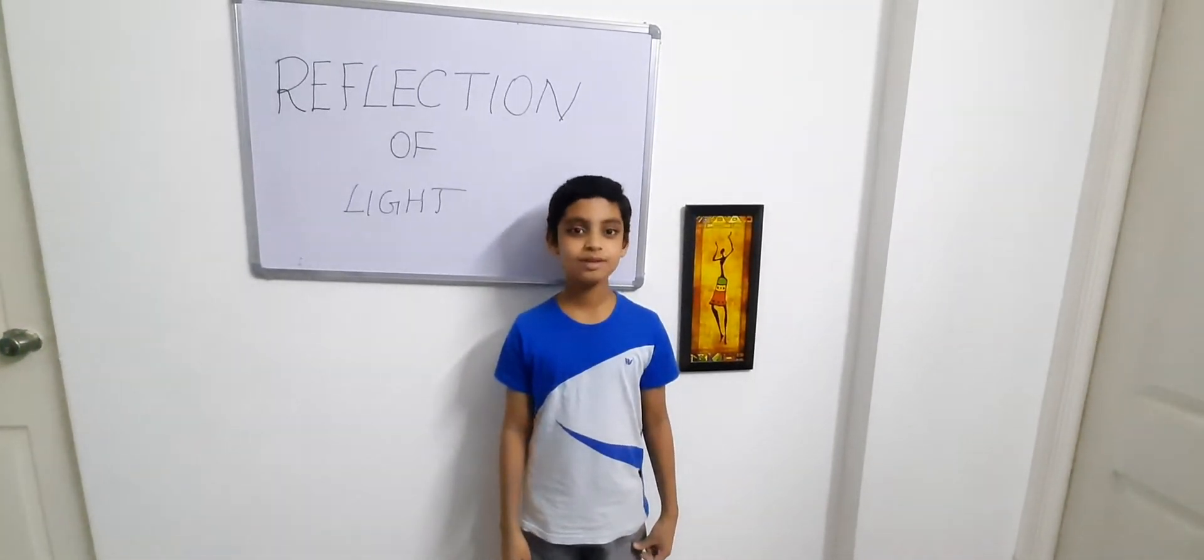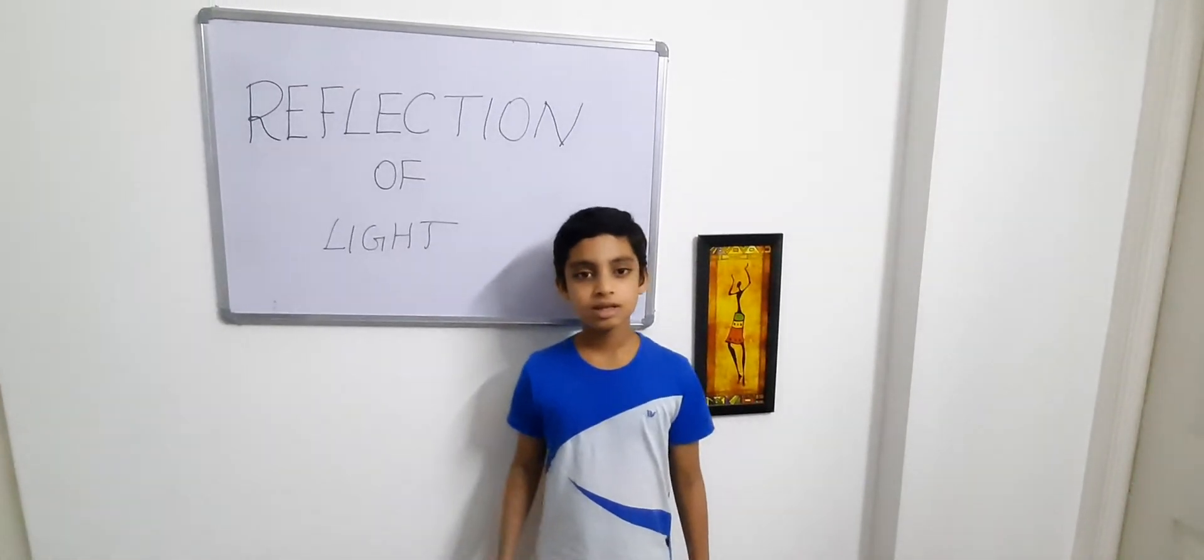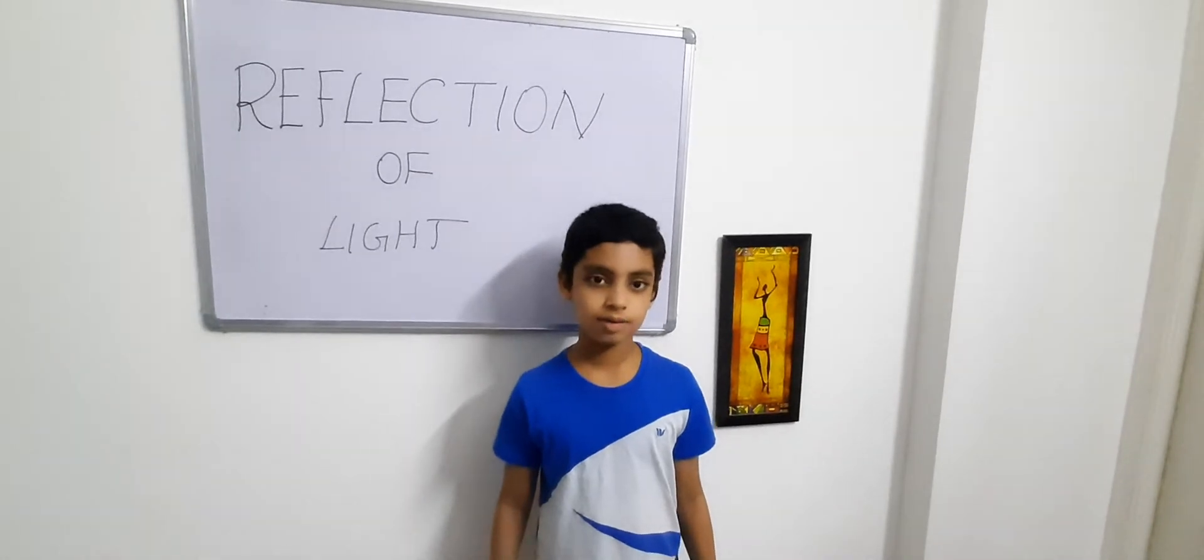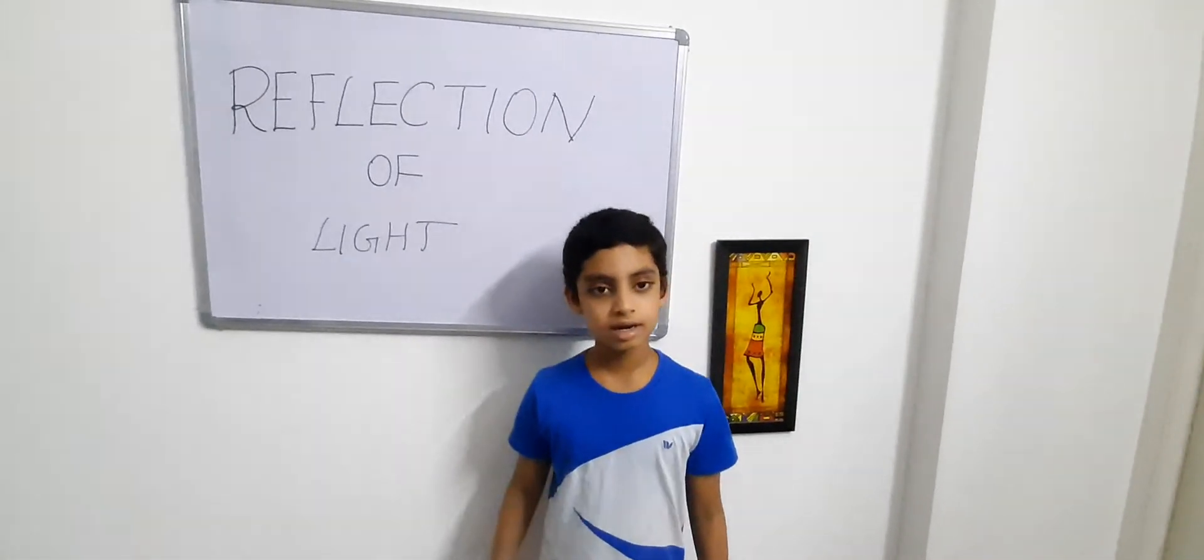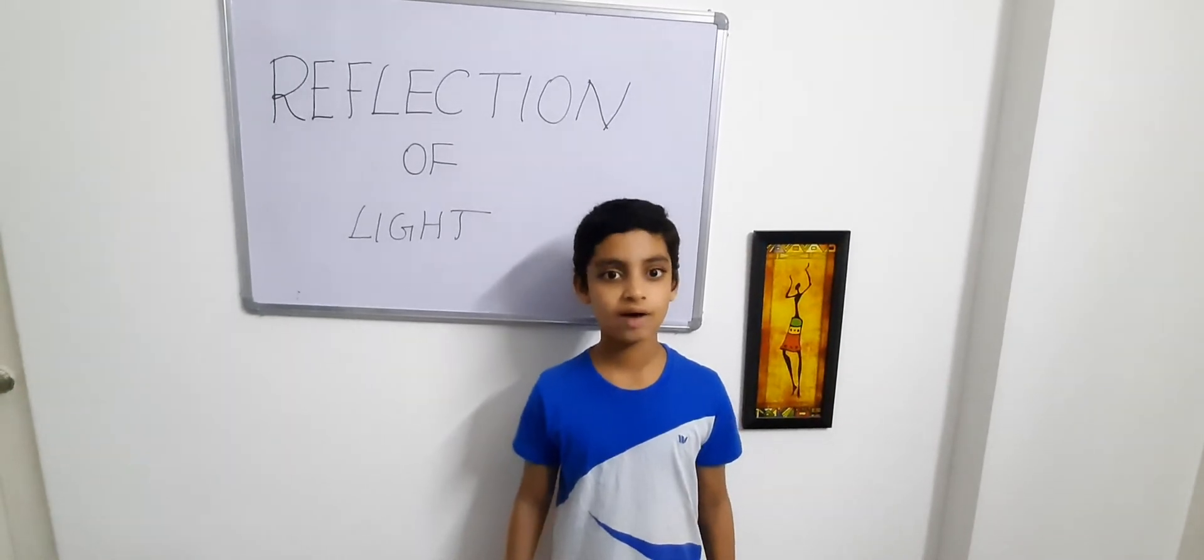Light energy enables us to see objects through reflection. The change in direction of light through an object is called reflection. Light energy always travels in a straight line even after reflection.